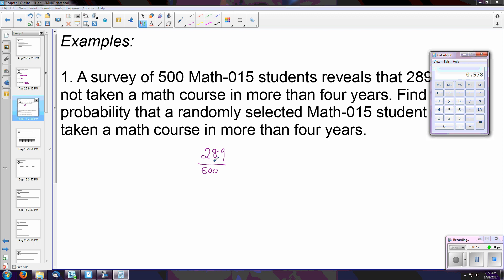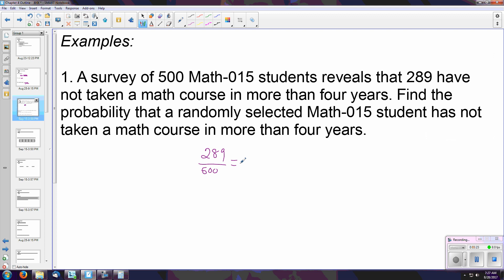So if we were to round this, and actually we don't have to round it, this is a terminating decimal .578. So what might this suggest to us? Well, convert that to a percentage to get a little more information. That is approximately 57.8%, so that means that over half of the students in Math-015 have not taken math in over four years.